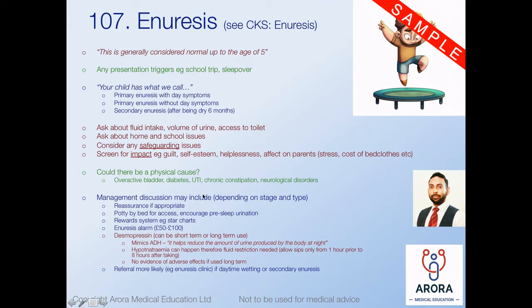Always keep a physical cause in mind, particularly for secondary enuresis: could it be overactive bladder, diabetes, a UTI, chronic constipation, or an underlying neurological disorder? Management will depend on what's been tried, but general options include reassurance, a potty by the bed for easier access, encouraging pre-sleep urination, reward systems like star charts, and enuresis alarms. There may be a request for desmopressin - remember this can be used short or long term, and it mimics ADH to reduce the amount of urine produced at night.